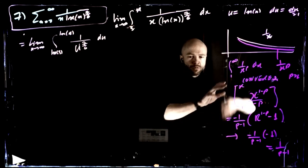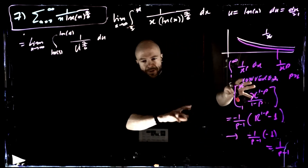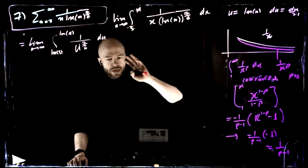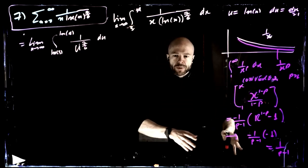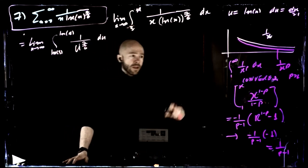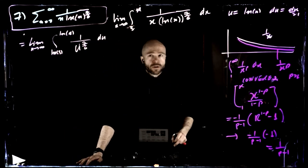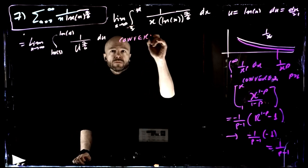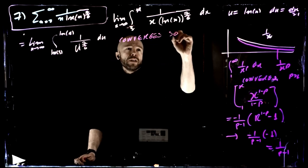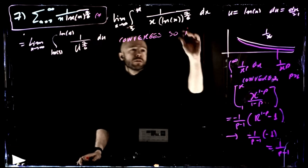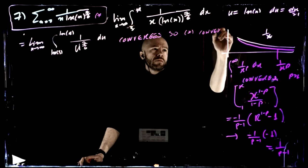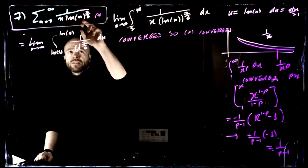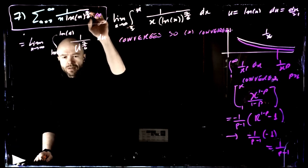Not being completely happy with material and having to go back makes things really hard. So nail everything down as we discuss it. The series with (log n) to the 7/6 converges — the integral converges, therefore the series converges. It's very similar to the last series, except we had the power to 1/2 before and now we have 7/6. This shows how delicate the situation is.